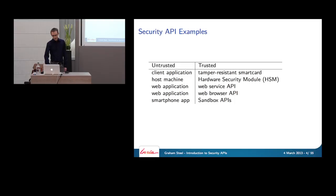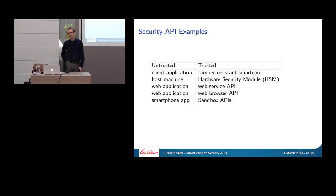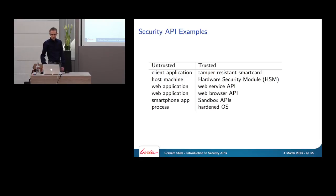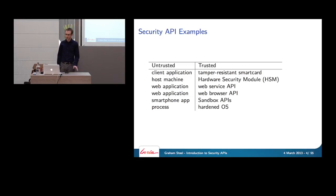Smartphone apps running inside a virtual machine are another example of a security API. I want to offer applications access to sensitive services like location, regulated so programs can't do certain bad things. We can even think of APIs offered by an operating system to normal processes as security APIs — in the sense that if a malicious process executes, it can only get access to certain restricted services.